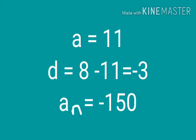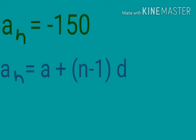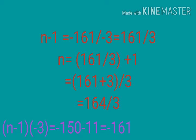Here A equal 11, D we need to find: 8 minus 11 that is negative 3. AN that is given as negative 150 — the number we want to check we take as AN. So AN equal A plus N minus 1 into D: negative 150 equal 11 plus N minus 1 into negative 3. Transposing 11 to the right side: negative 150 minus 11 equal negative 3 into N minus 1, giving negative 161. Then N minus 1 equal negative 161 by negative 3. Transposing negative 3: N equal 161 by 3 plus 1 equal 164 by 3.